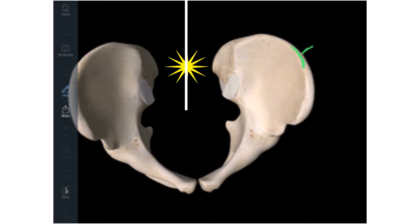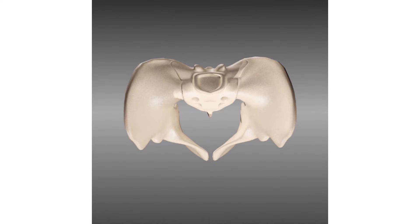The sacrum occupies the position of the axial skeleton posteriorly. There is a gap between the two hip bones posteriorly, but anteriorly the two hip bones join together by a joint called symphysis pubis. In this superior view, the two hip bones are joined together at the midline by symphysis pubis, and there are two sacroiliac joints — one on the right and one on the left.